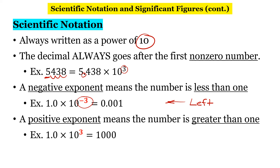A positive exponent means the number is greater than 1, so in this case we're moving the decimal to the right. Instead of moving it to the left three places, we're going to move it to the right three places — and that's how we end up with 1,000.